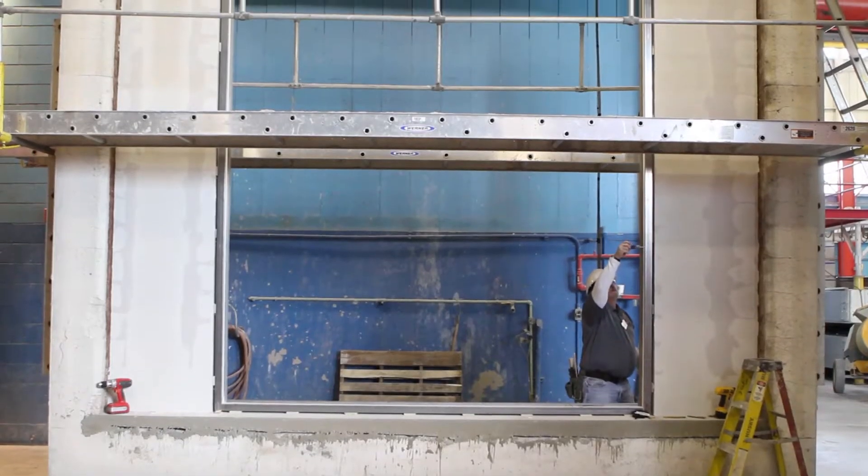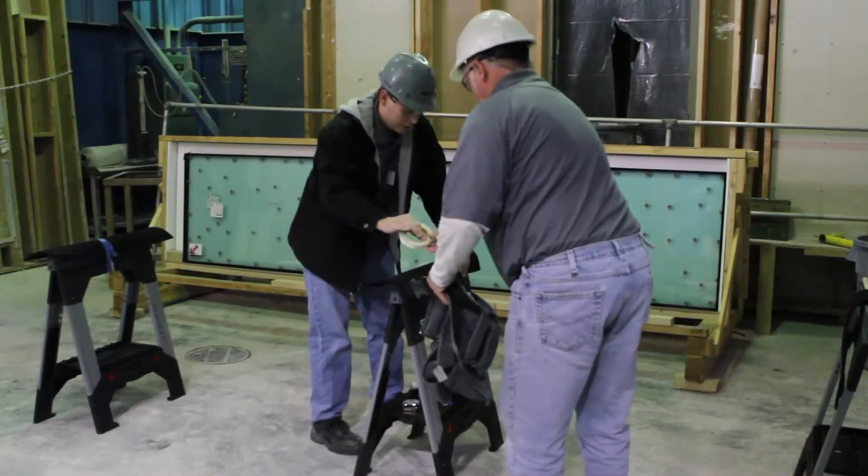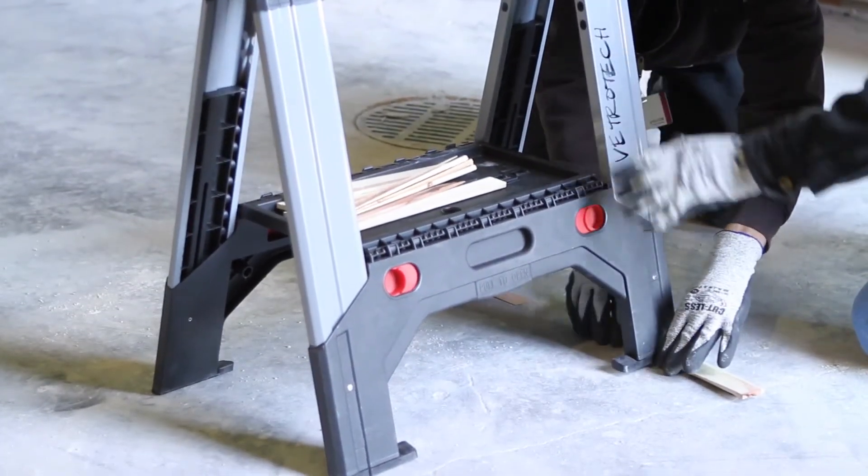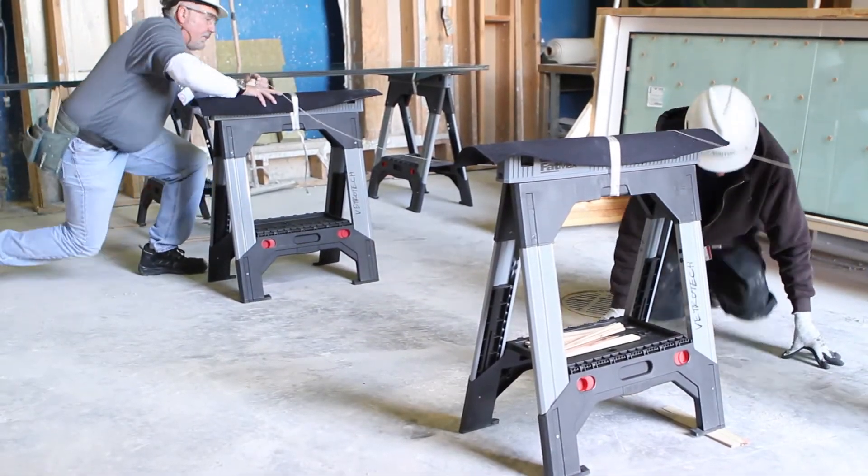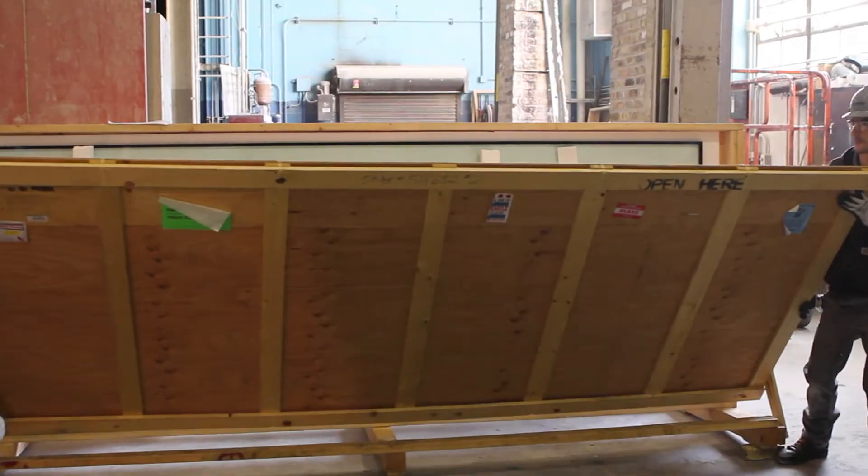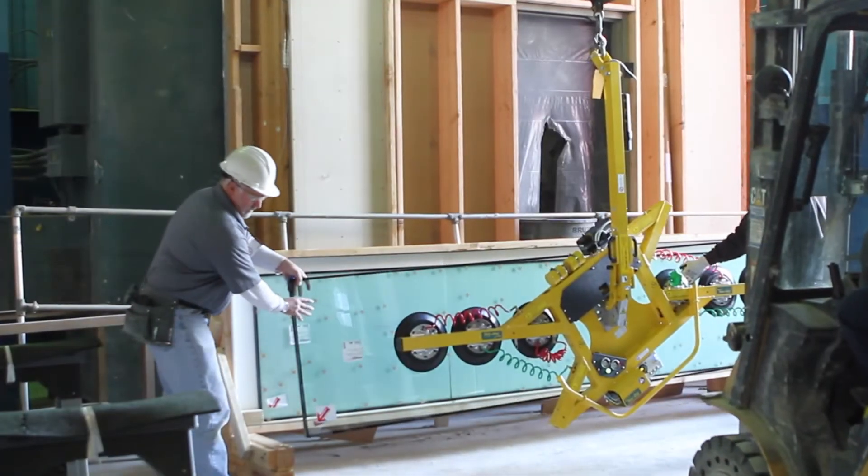Now that your frame is installed and perfectly square, clear a large area and set up sawhorses, tables, or other strong supports for each pane of glass. Carefully open the crate containing the glass panes and remove the first pane.